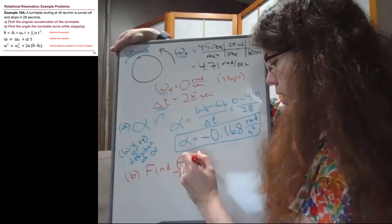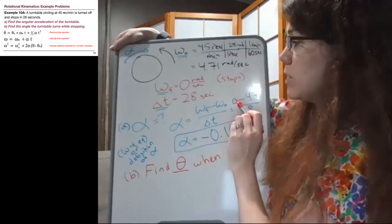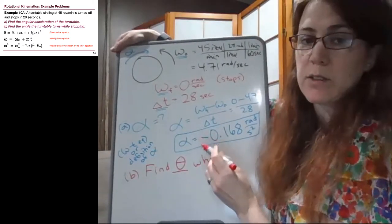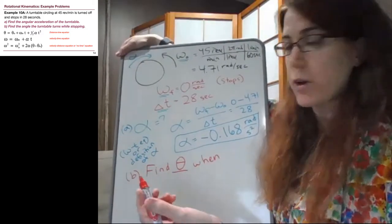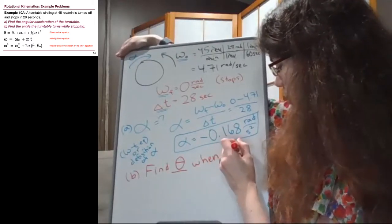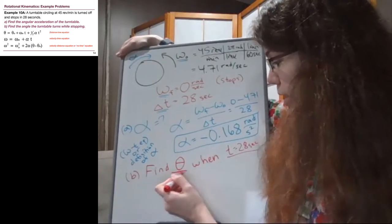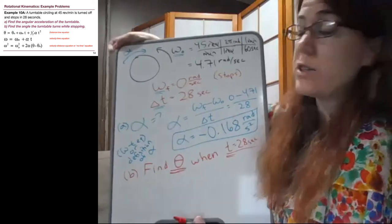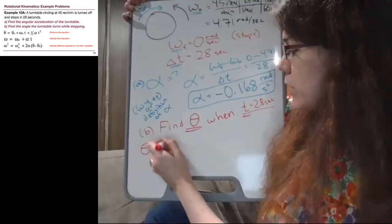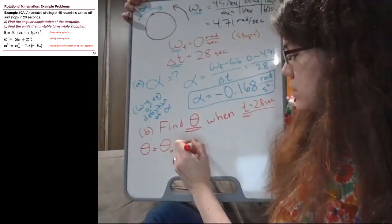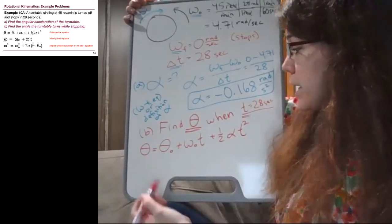We are trying to find the angle, so the angular distance theta, and we're trying to find it when either the final omega equals zero, or when the time is 28 seconds. Both of those will work. They will have us use a different equation if we choose one over the other. I'm going to say when t equals 28 seconds, because that lets us use the theta time equation, and that's already solved for theta on the left. It makes our math a little bit easier. So I'm going to write down the equation. It's the top one on our list from the slides.